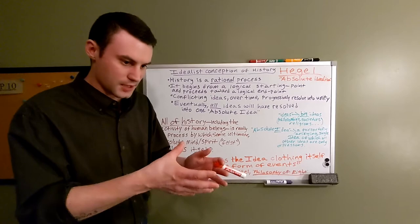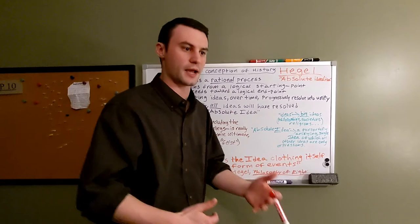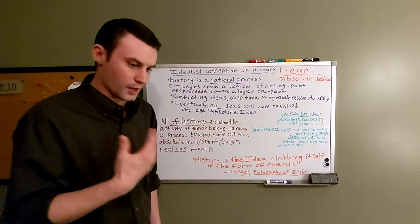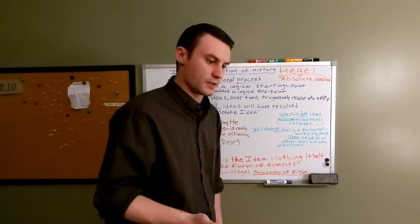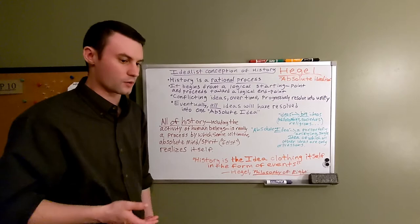Marx wants to take the historical process, the idea that there's some kind of logic to the way things happen in history, particularly with big social changes. Marx likes that. What he doesn't like is that Hegel doesn't give credit where Marx thinks credit is due. He doesn't ascribe the active side to human beings; he ascribes it to geist, to the spirit of the world, the spirit of history realizing itself.